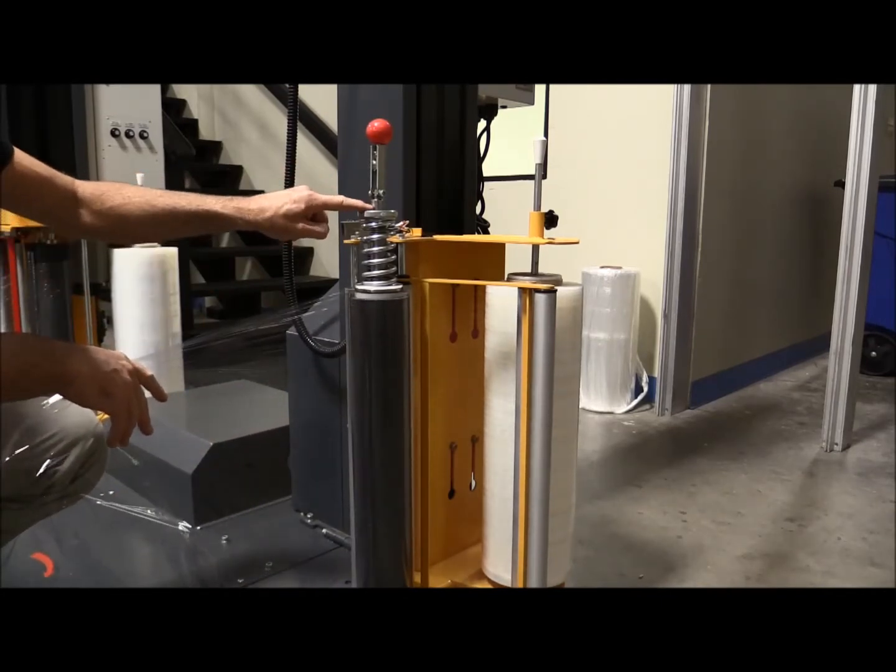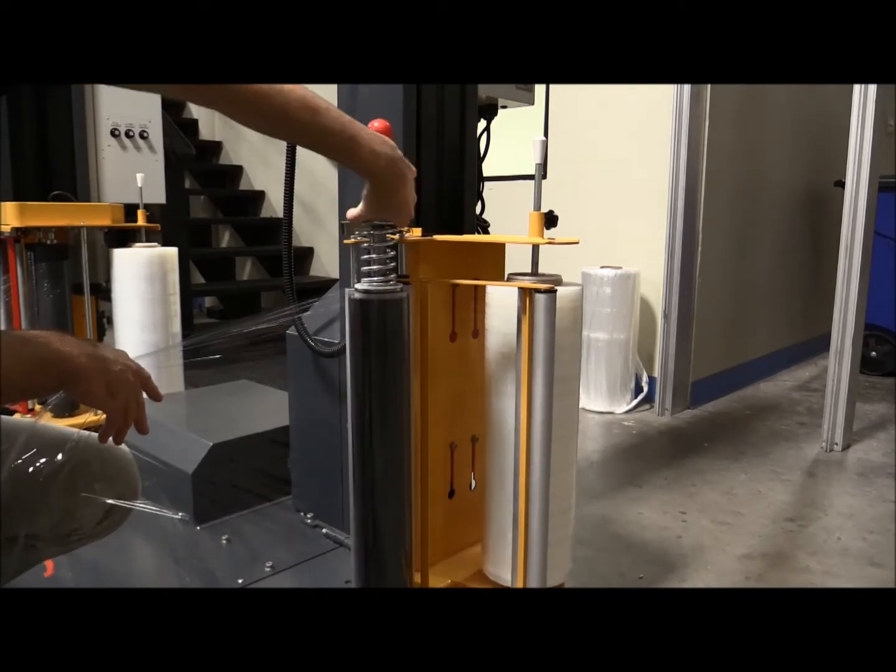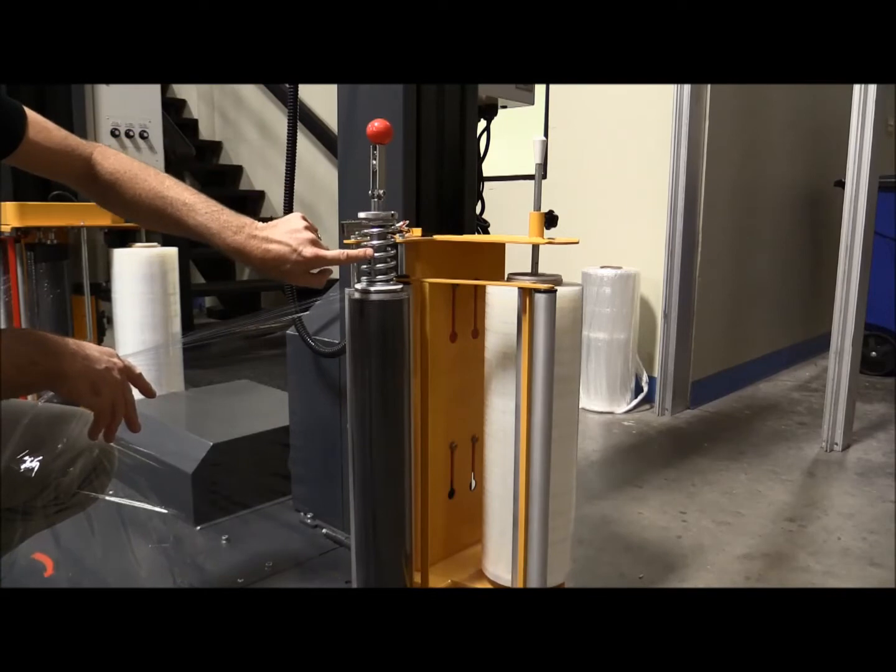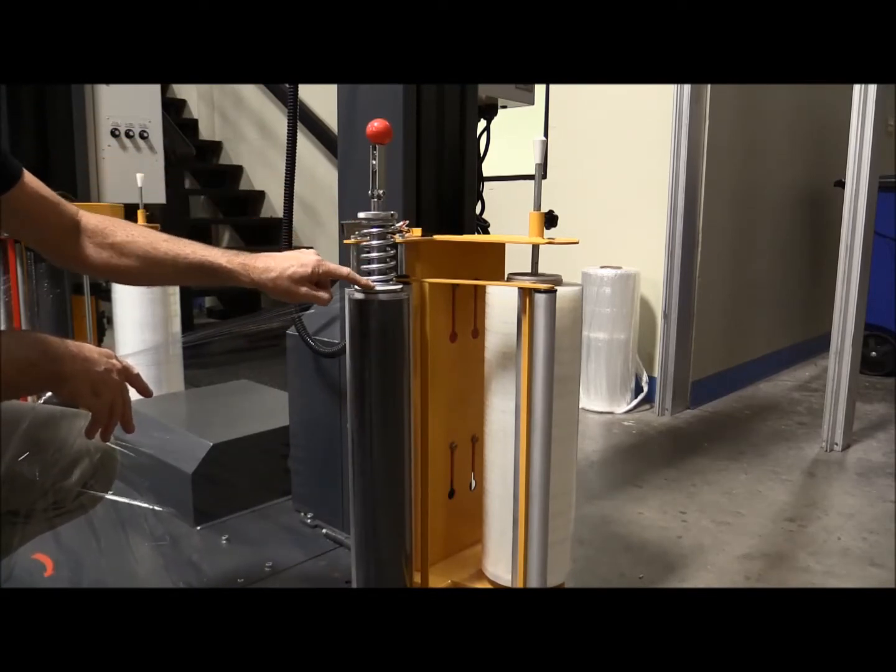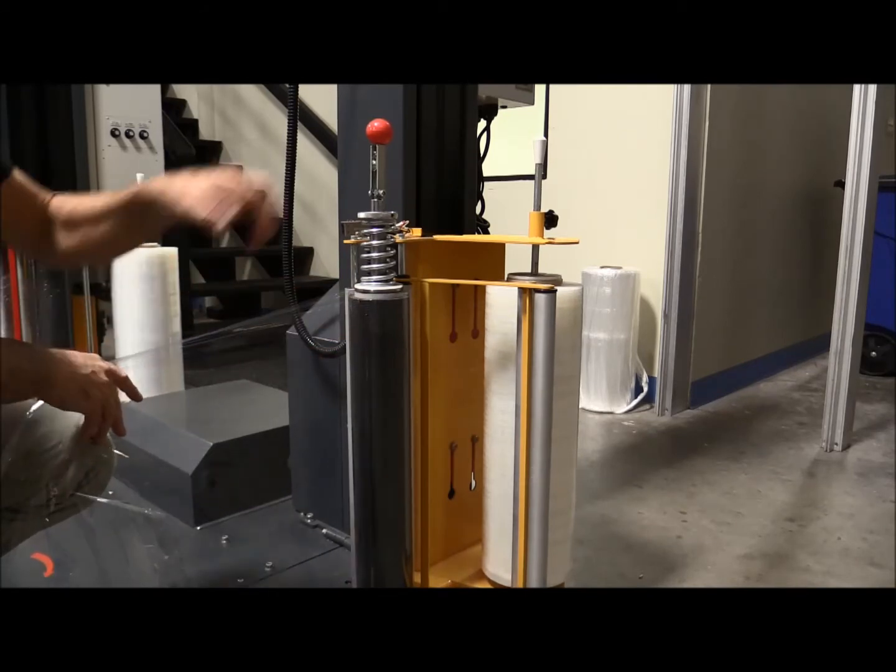Now if you want to increase more tension, you just turn the disc clockwise, and that increases more pressure down onto the spring, which creates more friction or drag on the free roller.